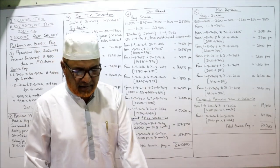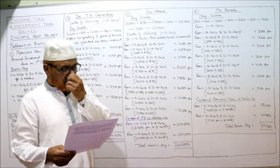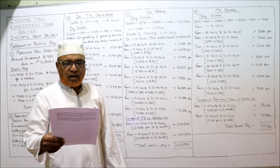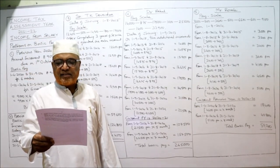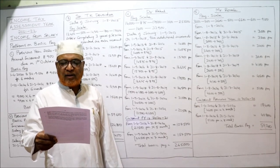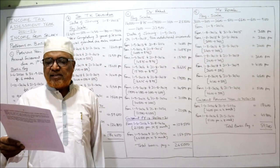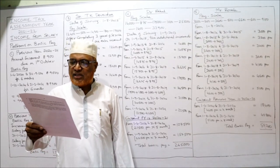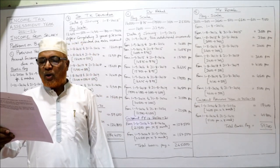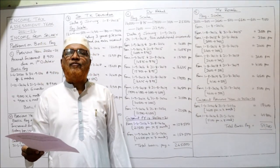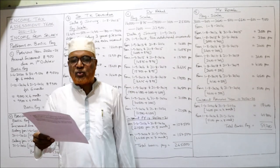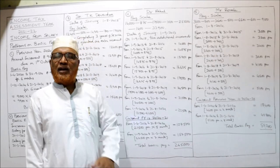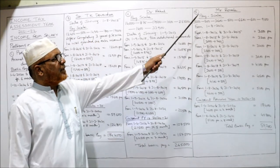One more — the last problem on this topic of basic pay. Mr. Ronak is employed in a limited company as a Senior Marketing Officer. The basic pay is in the scale of 3,200 – 200 – 3,600 – 500 – 6,600 – 600 – 9,100 with date of joining 1st August 2014. Calculate the total basic pay for previous year 2021.